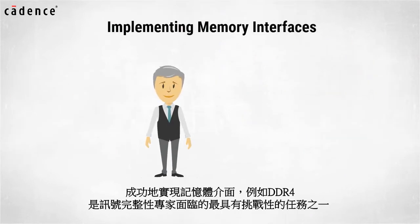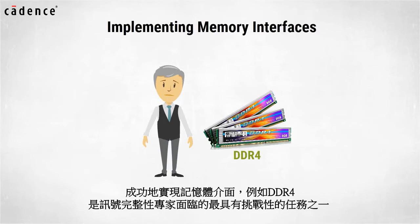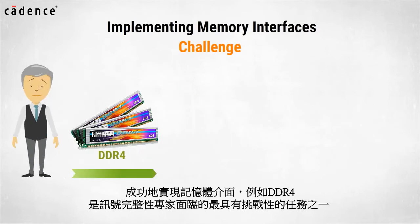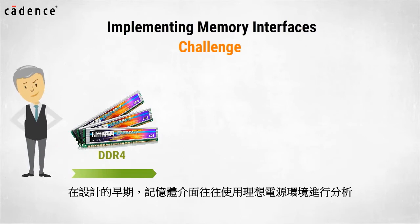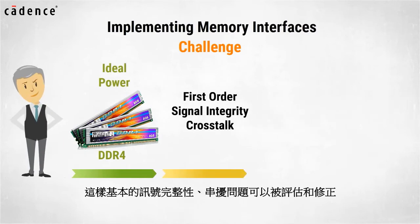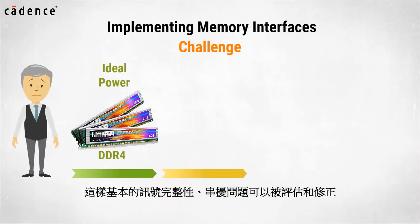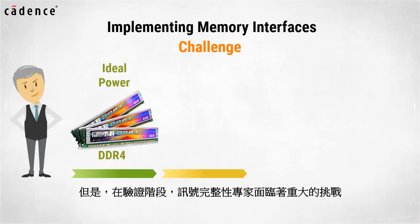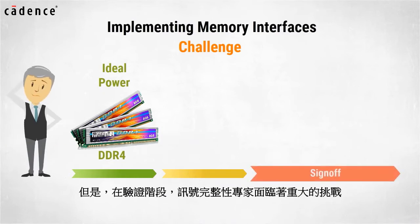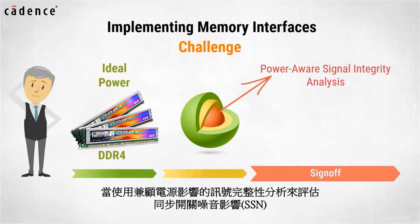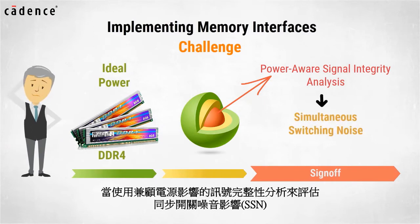Successfully implementing memory interfaces such as DDR4 is one of the most challenging tasks faced by SI engineers. Early in the design process, memory interfaces are typically analyzed using ideal power so that first-order signal integrity and crosstalk problems can be assessed and corrected. However, significant challenges are faced during the sign-off stage when power-aware signal integrity analysis is performed to assess the effect of simultaneous switching noise, or SSN.